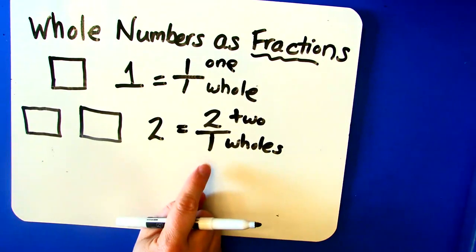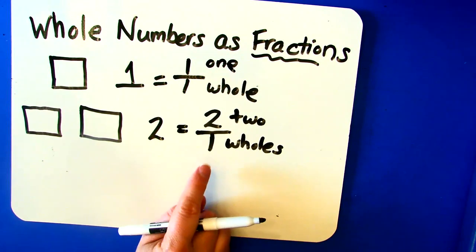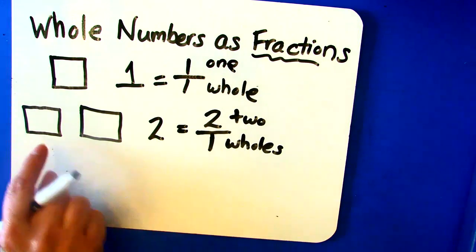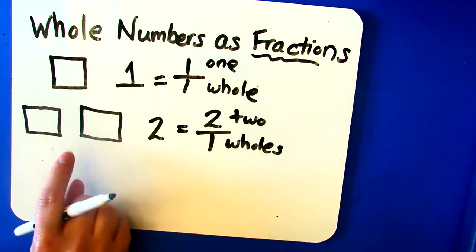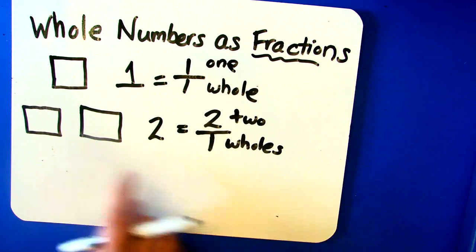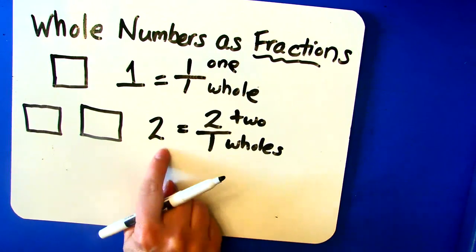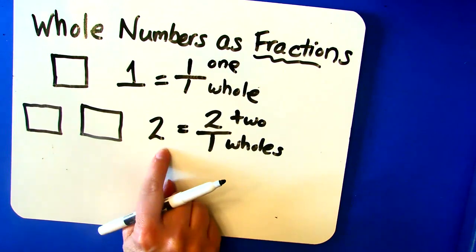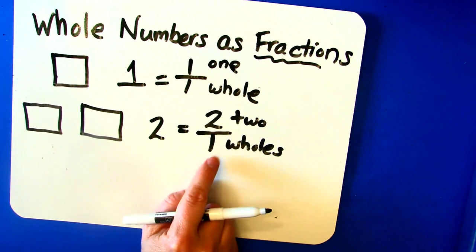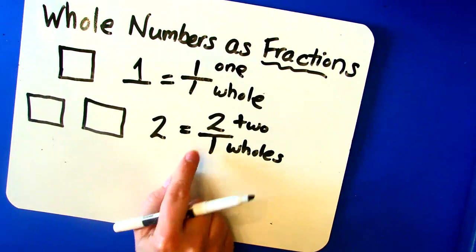Now, just like we learned, the denominator always represents the total number of parts the whole is divided into. These wholes, though, are whole. They're not divided into any equal parts. And that's what that one means. A whole number can be represented as a fraction with a denominator of one.